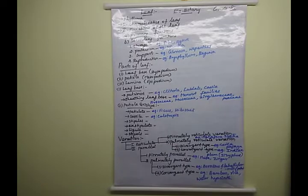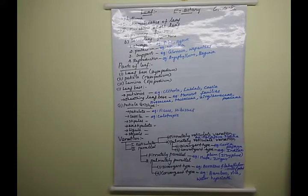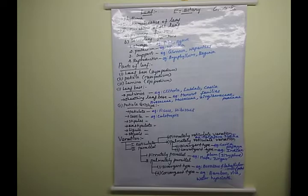What is the first and foremost important function of the leaf? Very good — photosynthesis. That is the site of photosynthesis, the major area of the leaf. Many other functions also take place here: transpiration and gaseous exchange. These are the functions performed in the leaf area.